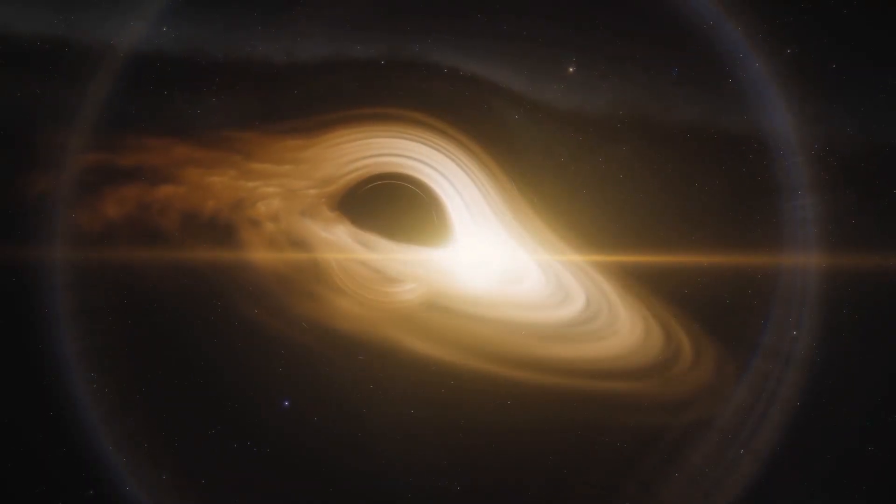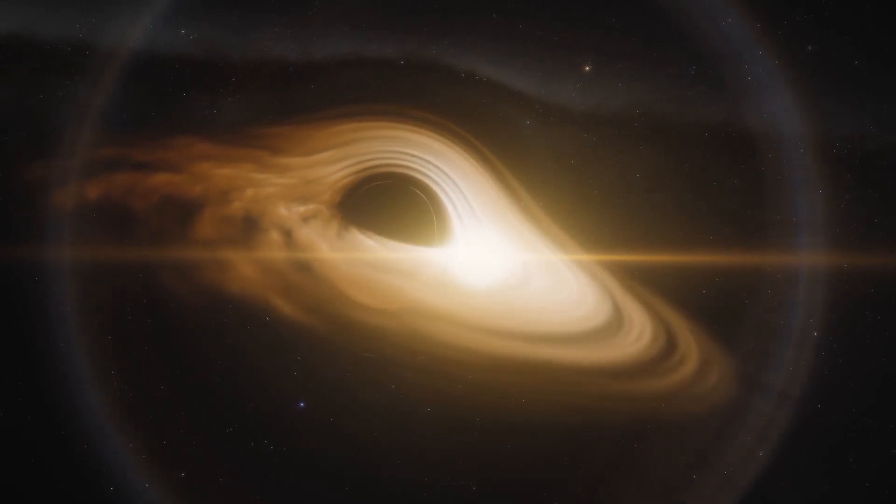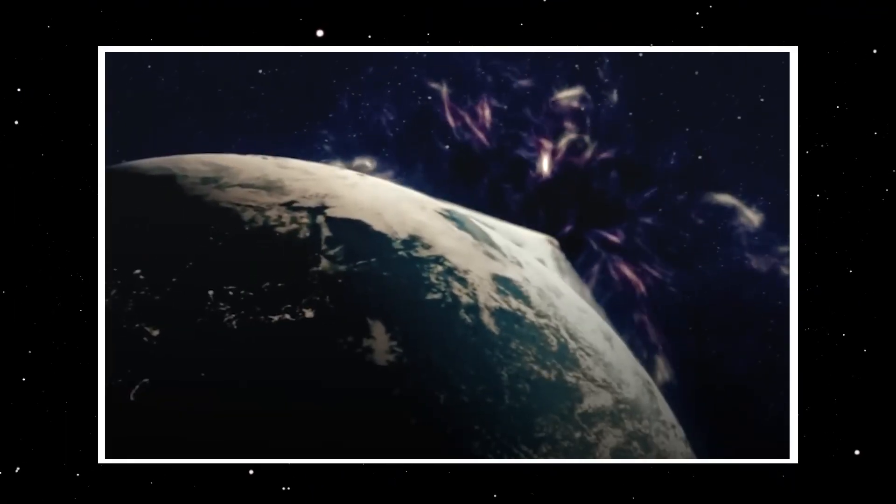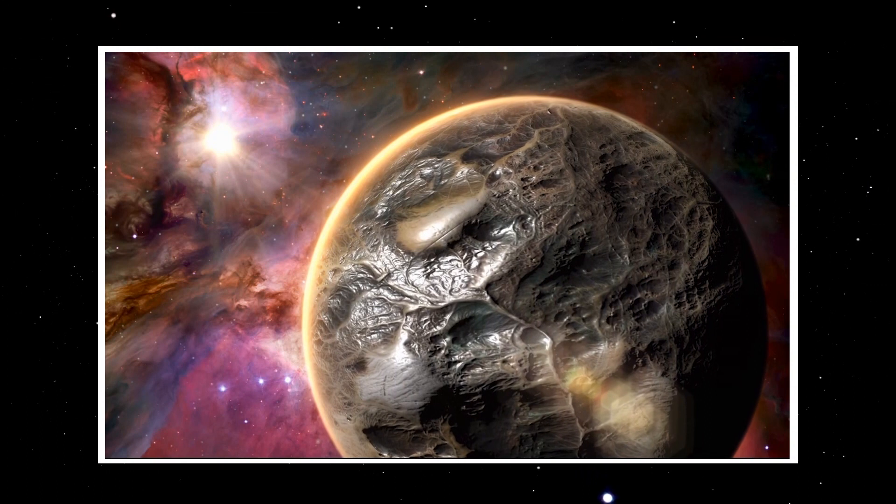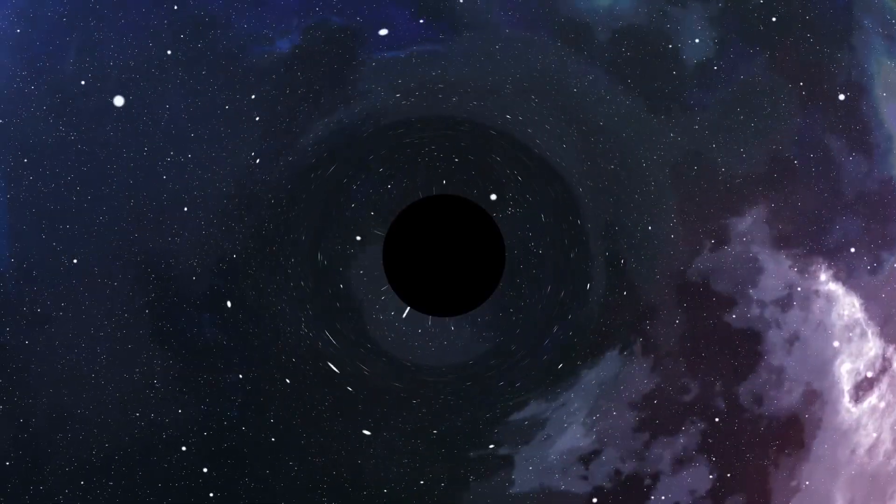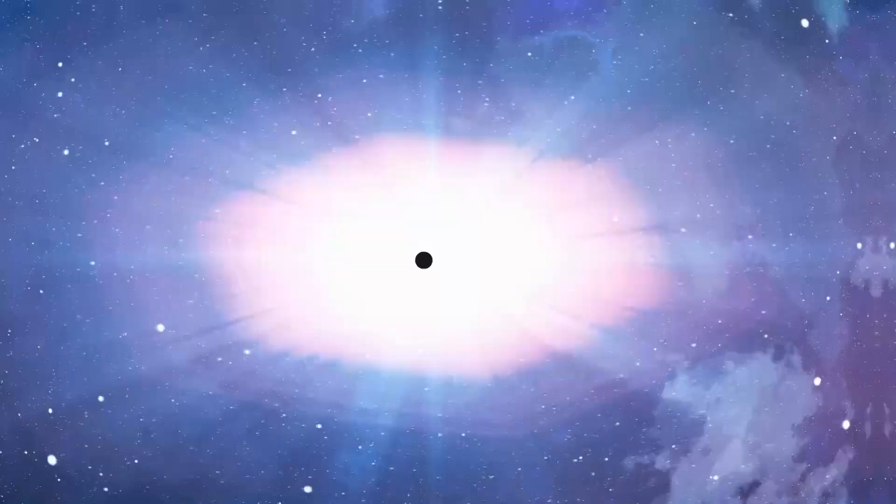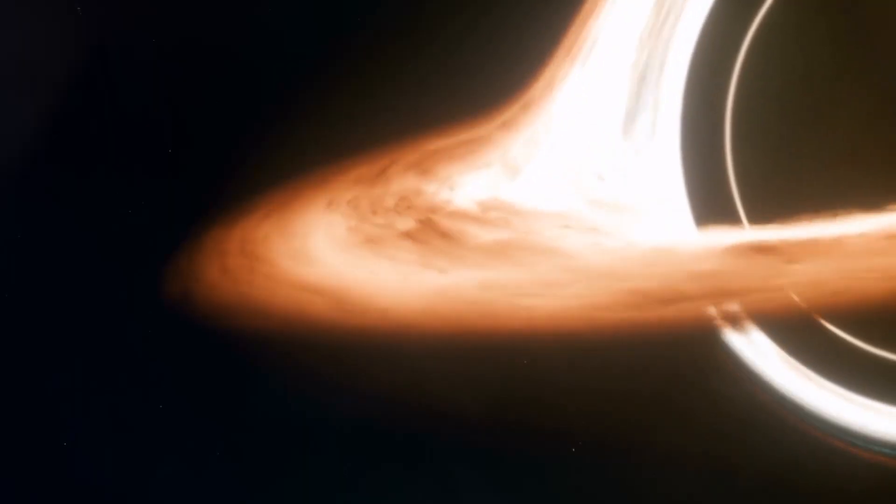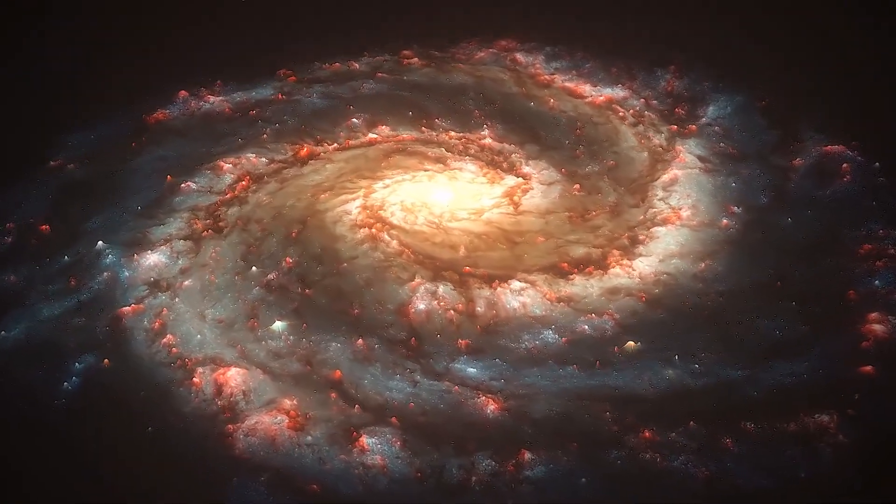While stellar black holes are made when a big star collapses into a supernova, supermassive black holes, on the other hand, are theorized to have been made at the same time as the galaxies they're located in. These black holes have the ability of growing throughout their lives, consuming gas and dust from any object in space that creeps too close to it.